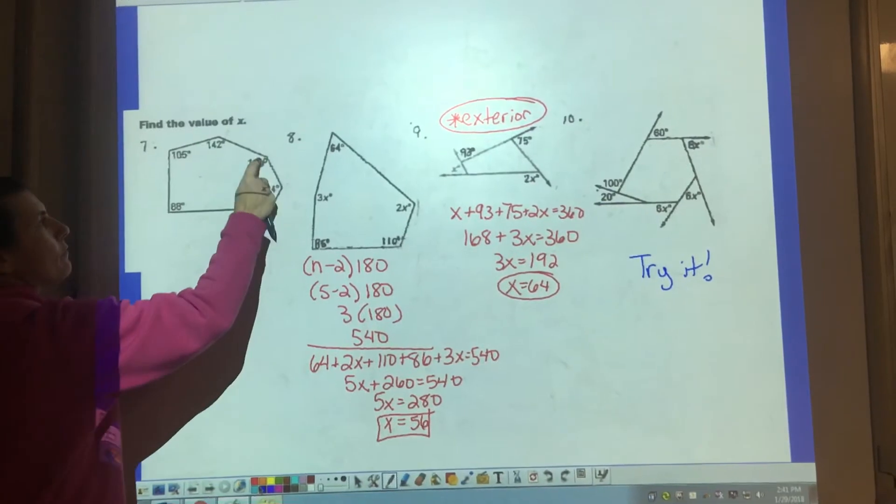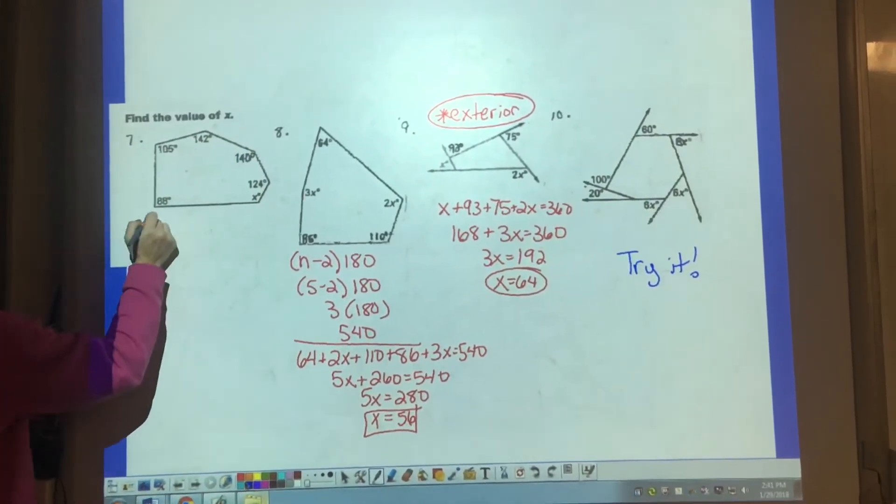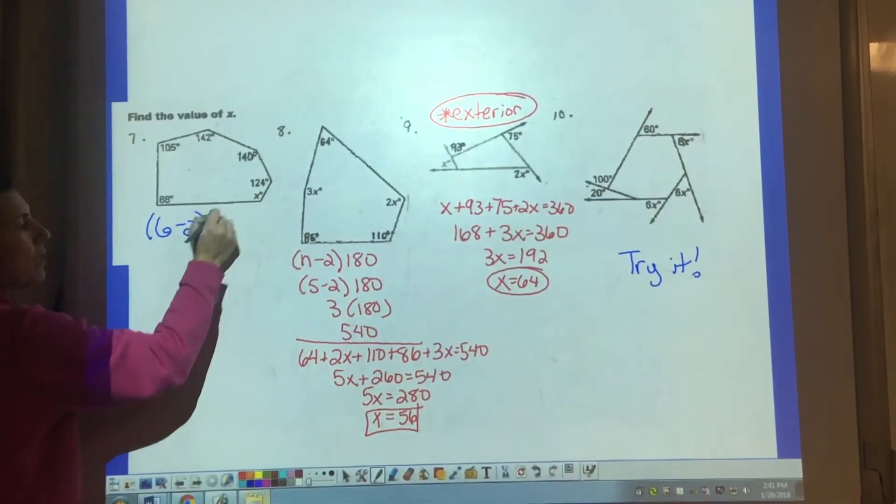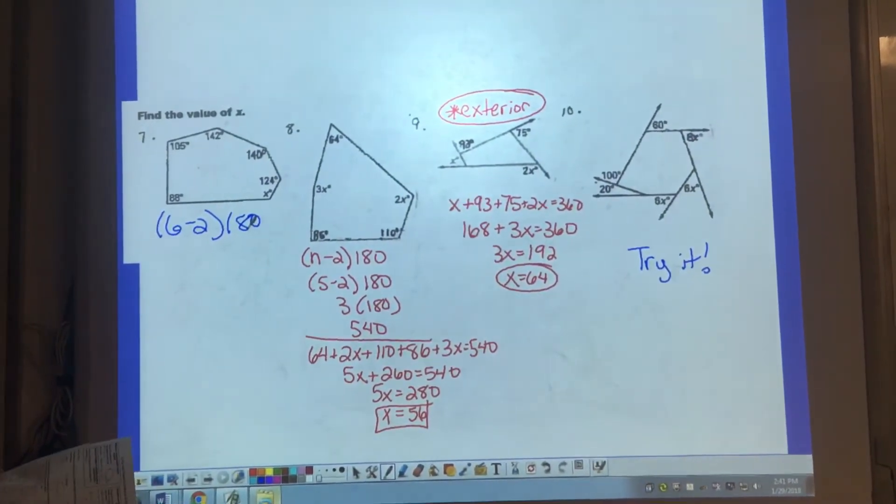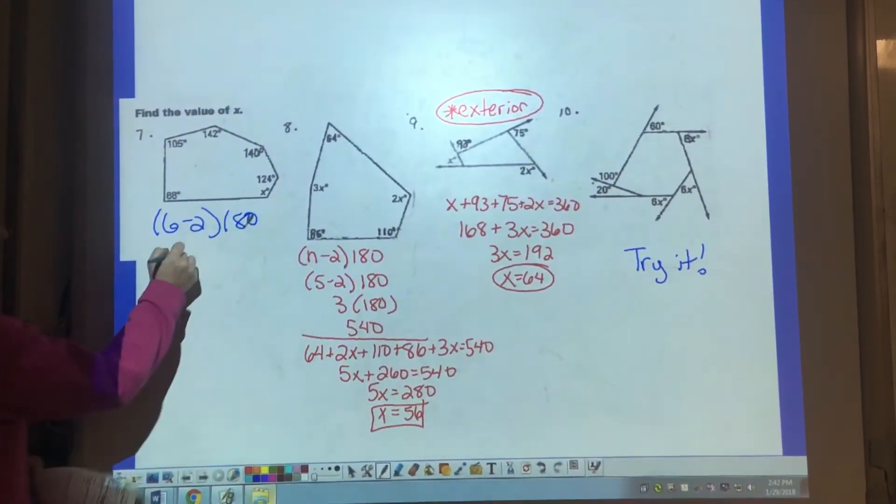We have one, two, three, four, five, six sides. So I'm going to say six minus two times 180 will give us the sum of the sides, which will help us set up an equation. When we solve this, we get 720.